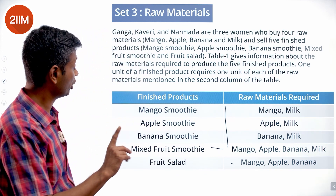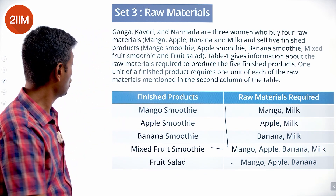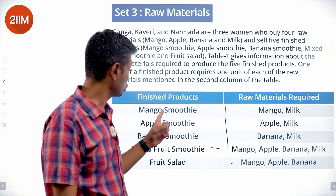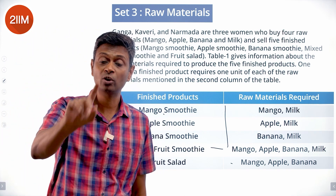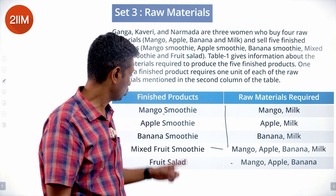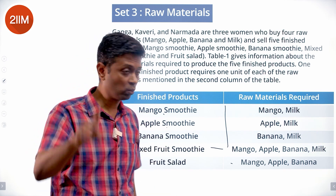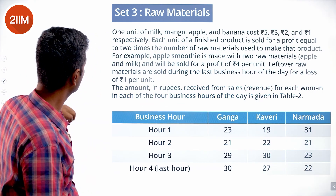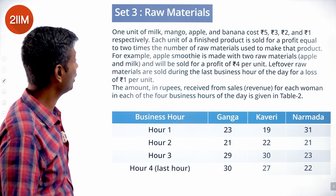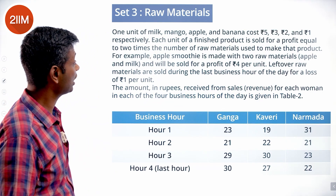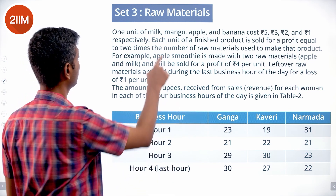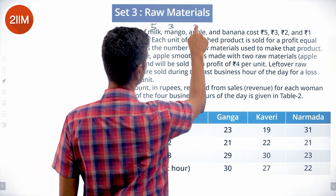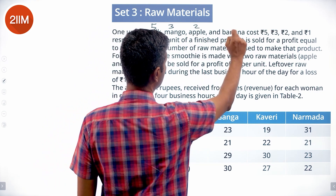One unit of a finished product requires one unit each of the raw materials mentioned. So to produce one mango smoothie, I need one unit of mango and one unit of milk. One apple smoothie needs one unit of apple and one unit of milk. Milk is 5, mango is 3, apple is 2, banana is 1.